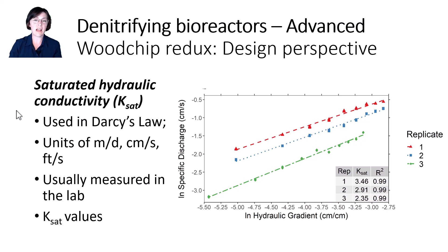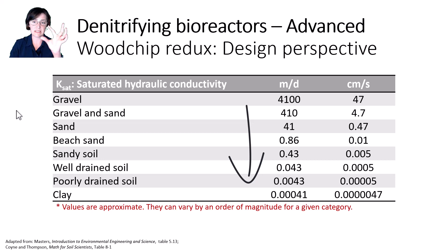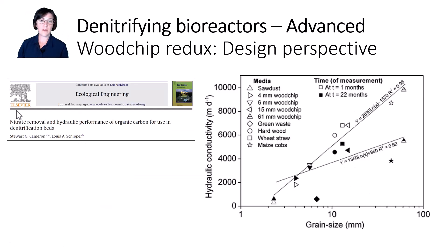At the end of these slides, I'll include a link to a video showcasing one of the biggest woodchip permeameters I've ever seen. So what are normal values of saturated hydraulic conductivity? Let's start with KSAT values for soil, because this is really the traditional use of Darcy's law — flow through groundwater. Not surprisingly, as your particle size gets smaller, KSAT decreases. This trend is the same for woodchips, where smaller wood media have lower KSAT than larger.